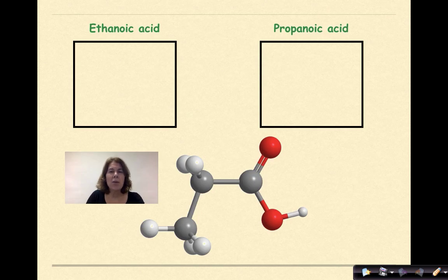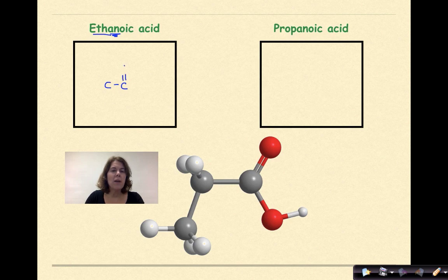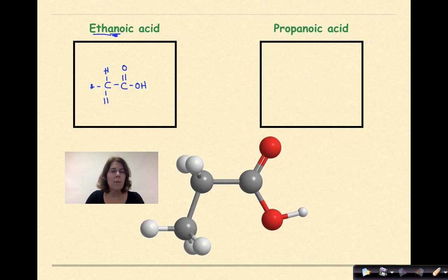Let's do two examples: ethanoic acid and propanoic acid. Ethanoic acid — eth meaning two carbons, with a single bond between them for -AN, and the -oic acid ending means on an end carbon we have C double-bonded O with an OH — that is our carboxyl group. Filling in the bonds and hydrogens on the other carbon, the condensed structural formula is CH₃COOH — this one might look familiar.